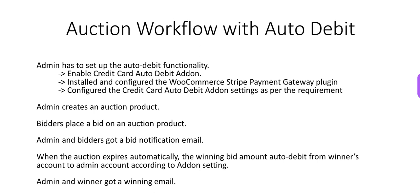Then the admin creates an auction product and bidders place a bid on it. The admin and bidders receive a bid notification email. When the auction expires automatically, the winning bid amount is auto-debited from the winner's account to the admin account according to the add-on settings. Then the admin and winner receive a winning email.